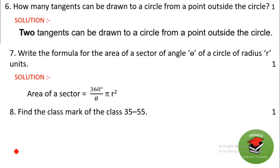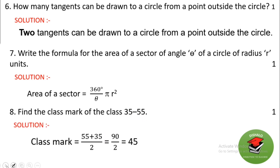Find the class mark of the class 35 to 55. We use the formula: (upper limit + lower limit) / 2. So (55 + 35) / 2 = 90 / 2 = 45.